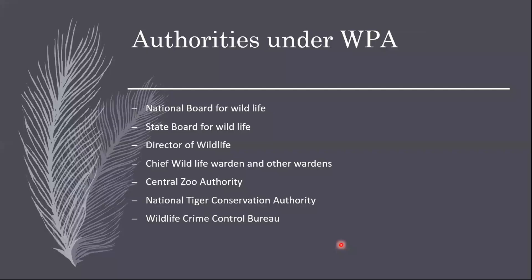WPA is a big and comprehensive act — one of the first enacted by Parliament. It created all kinds of authorities for wildlife protection. First is the National Board for Wildlife for overseeing all kinds of environment protection. States are required to set up State Boards reporting to the National Board. Directors of Wildlife are present at national and state levels. Then the Chief Wildlife Warden and other wardens are the actual people in touch with the realities in national parks and sanctuaries. The Central Zoo Authority and Tiger Conservation Authorities were also created specifically for tiger conservation. The Wildlife Crime Control Bureau is the crime branch of WPA — special forces that investigate wildlife-related crime.